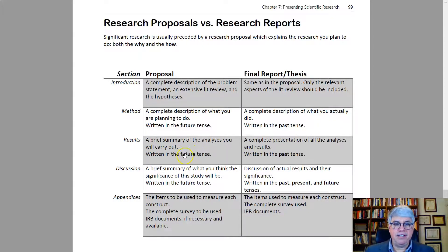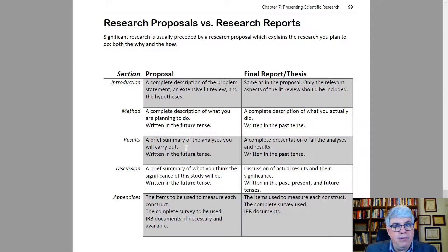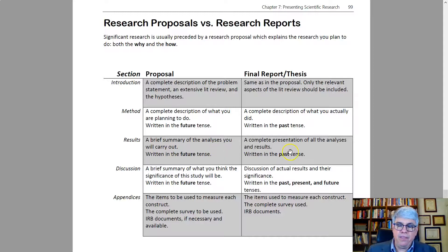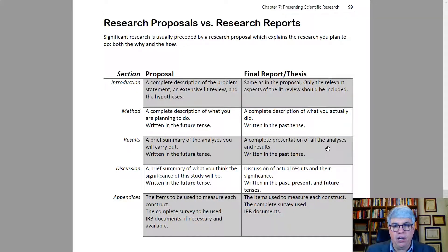The results section in the proposal is really short — just a brief summary of the analyses you're going to carry out, written in the future tense. You don't have any results yet, so you can only say how you're going to get them. This might be just a few sentences or a paragraph. But in your thesis, it's a complete presentation of all the analyses and all the results, written in the past tense — this is what you found.